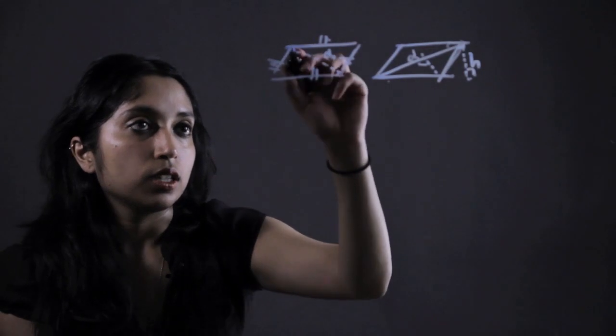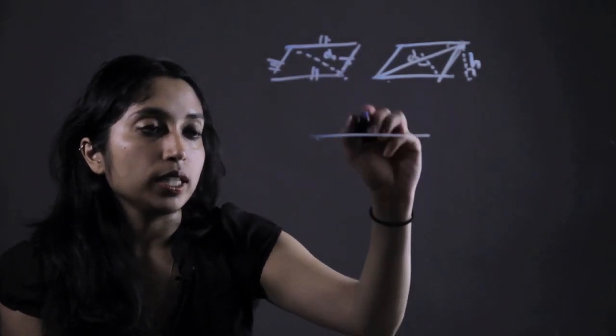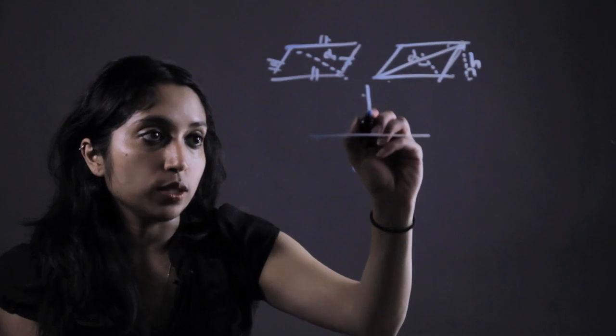So if we wanted to construct a rhombus, it's probably easiest to divide it into two equal triangles.